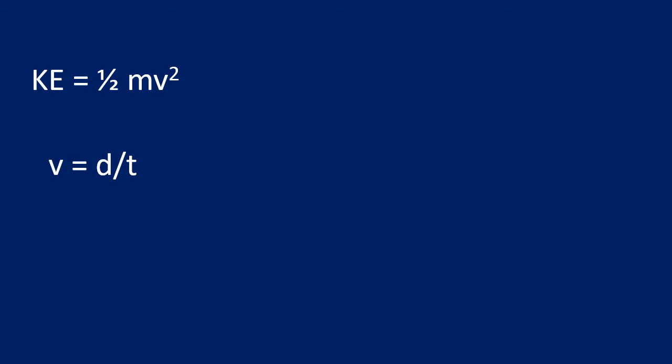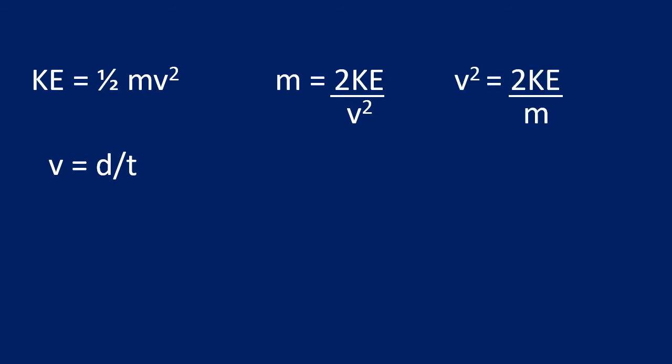We also need to be able to rearrange these equations. You'll likely be given them, but you must rearrange them. Kinetic energy can be rearranged to get mass, or to get velocity squared, where velocity equals the square root of 2KE over m. Likewise, the velocity equation can be rearranged to give distance equals velocity multiplied by time, or time equals distance divided by velocity.